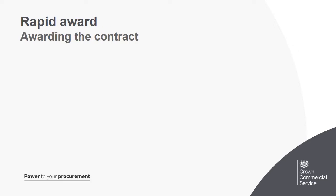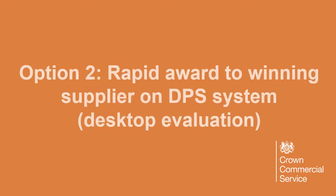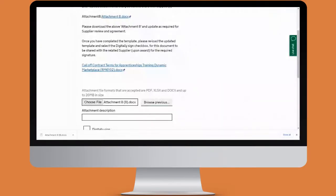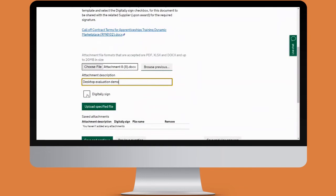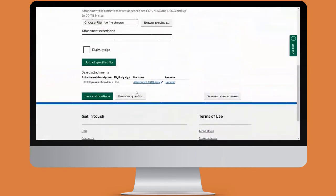Once your evaluation is complete and you've completed your contract documents, rapid award to the winning supplier. So far none of the suppliers will have been notified of your activity on the system. With the rapid award you only need to contact the winning supplier — you can take it offline over email or a procurement tool, or do the same using the DPS system and DocuSign. Upload the file from your computer, give it a name, indicate that you'd like the supplier to digitally sign it, and click upload specified file. The file will appear at the bottom, then click save and continue.